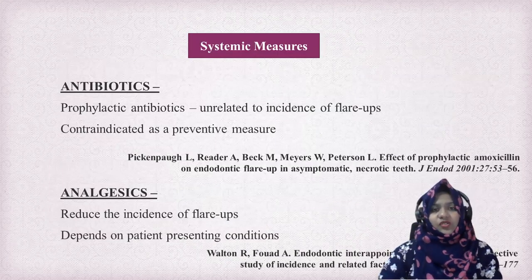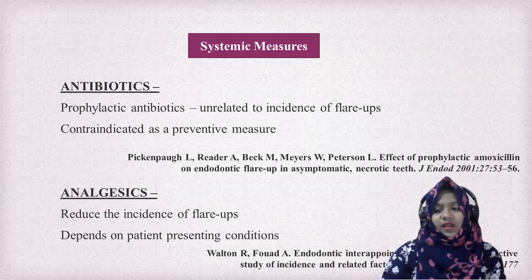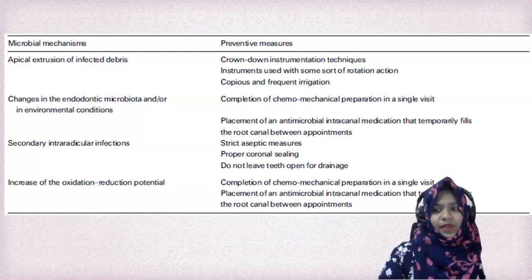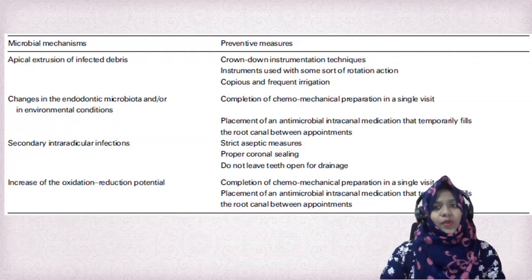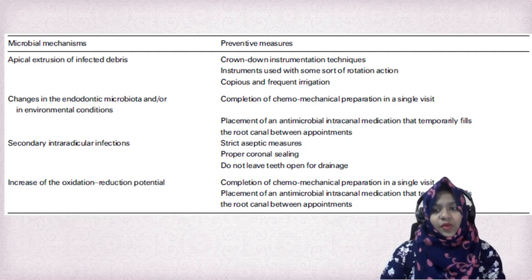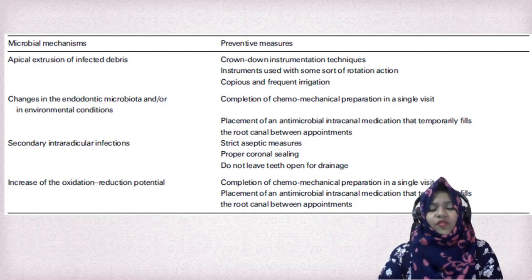Coming to systemic measures: prophylactic antibiotics are unrelated to the incidence of flare-up and are contraindicated as a preventive measure. Analgesics do reduce the incidence of flare-ups depending on the patient's presenting conditions. To summarize prevention: apical extrusion of infected debris can be prevented by crown-down instrumentation with copious irrigation; changes in environmental conditions by completing chemo-mechanical preparation in a single visit; secondary intraradicular infection by following strict aseptic measures; and alteration of the oxidation-reduction potential by placement of an intracanal medicament between appointments.